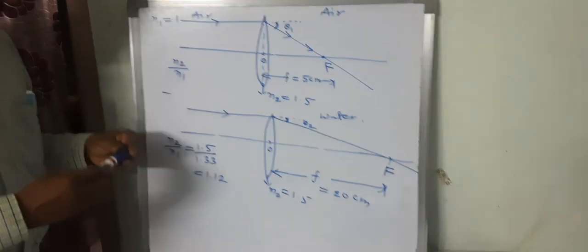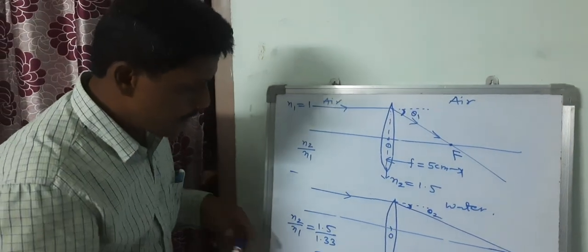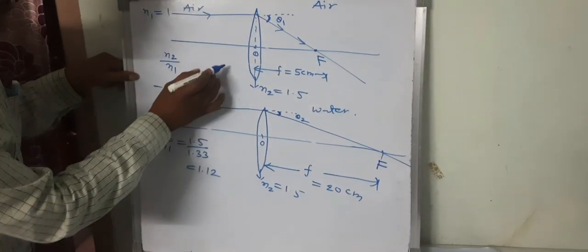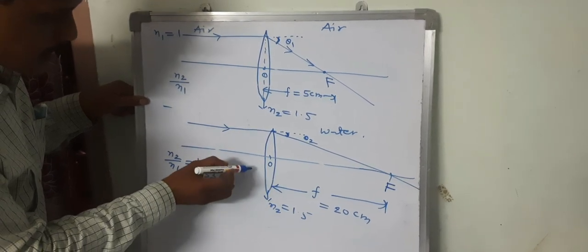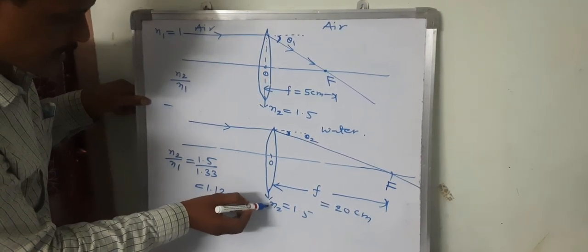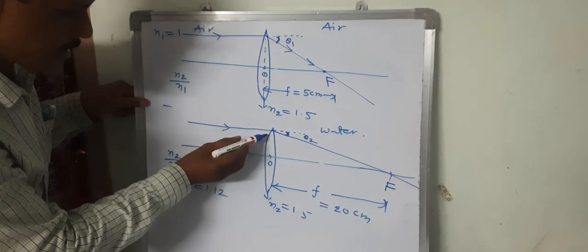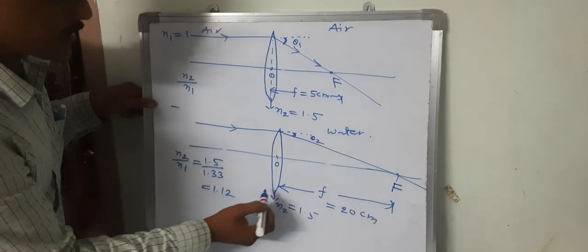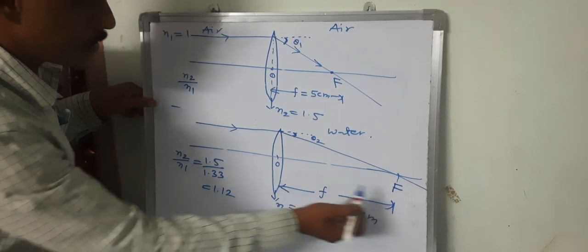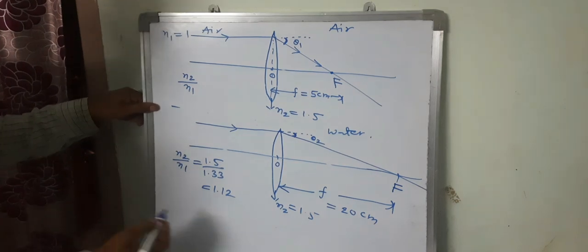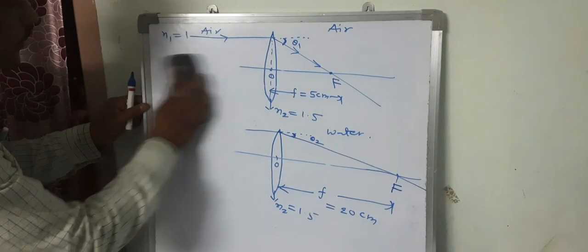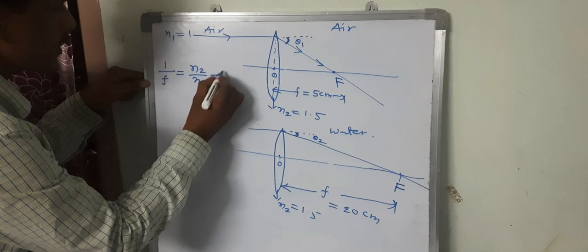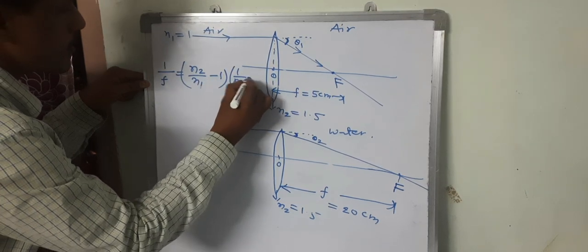From these two observations we can conclude that when the convex lens is placed in water, the focal length increases compared to air, because the relative refractive index decreases, so the optical power decreases, and the light ray bends with a smaller angle with the focus located farther from the optical center. We know the distance from the optical center to the focus is the focal length — that is why it increases. From the lens maker's formula: 1/F = (N2/N1 − 1) × (1/R1 − 1/R2).